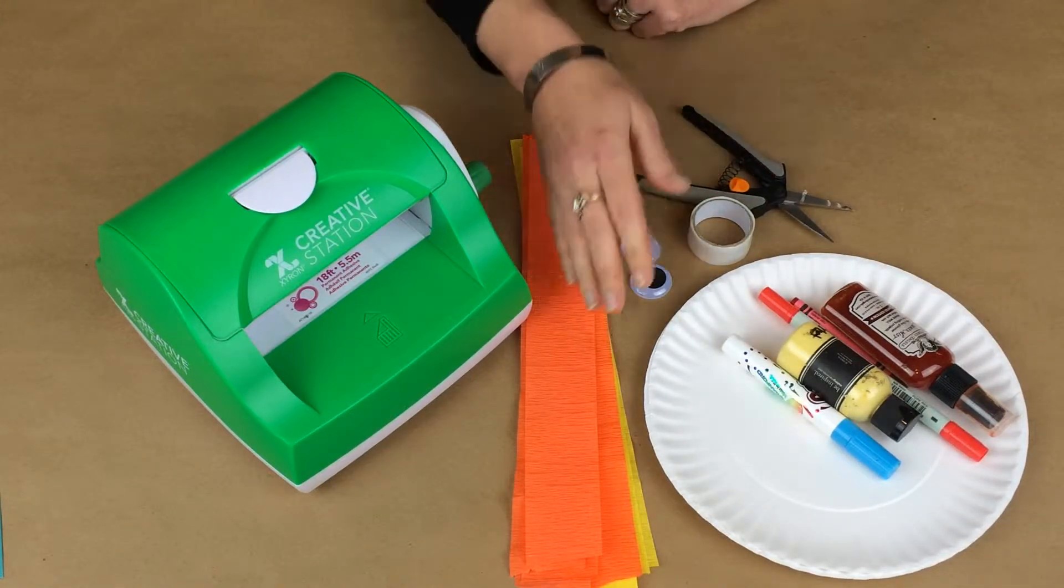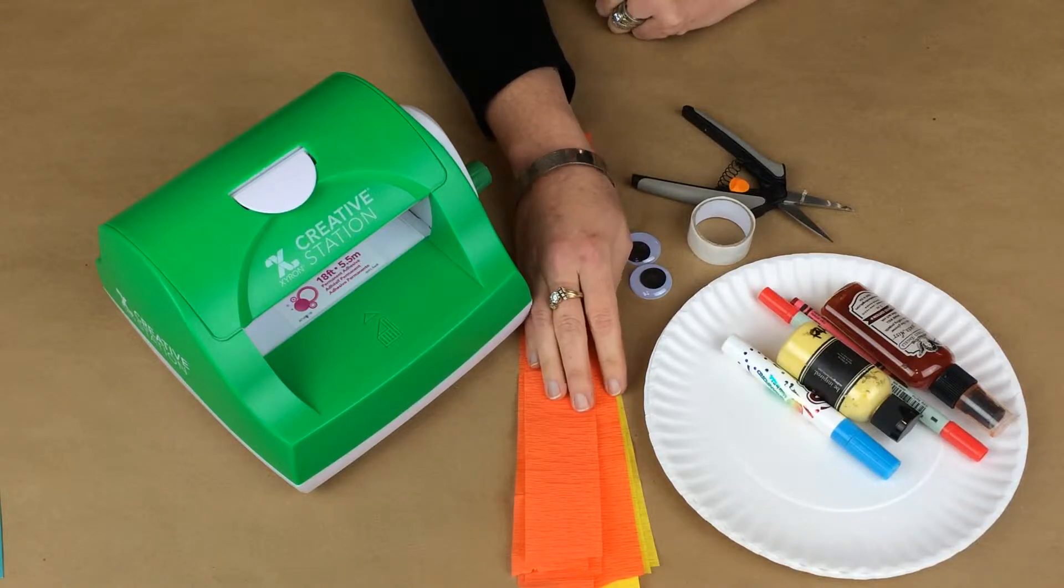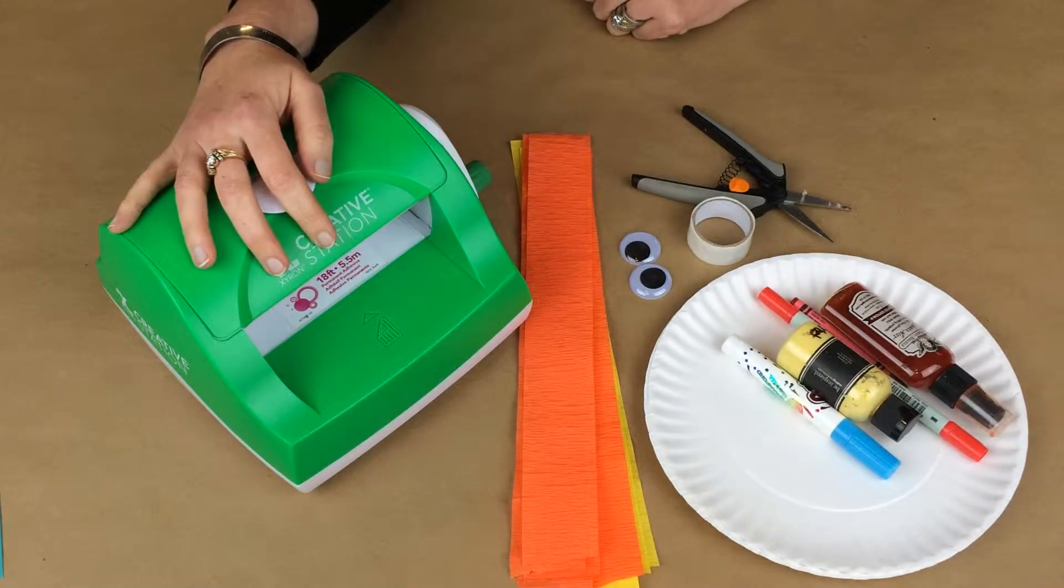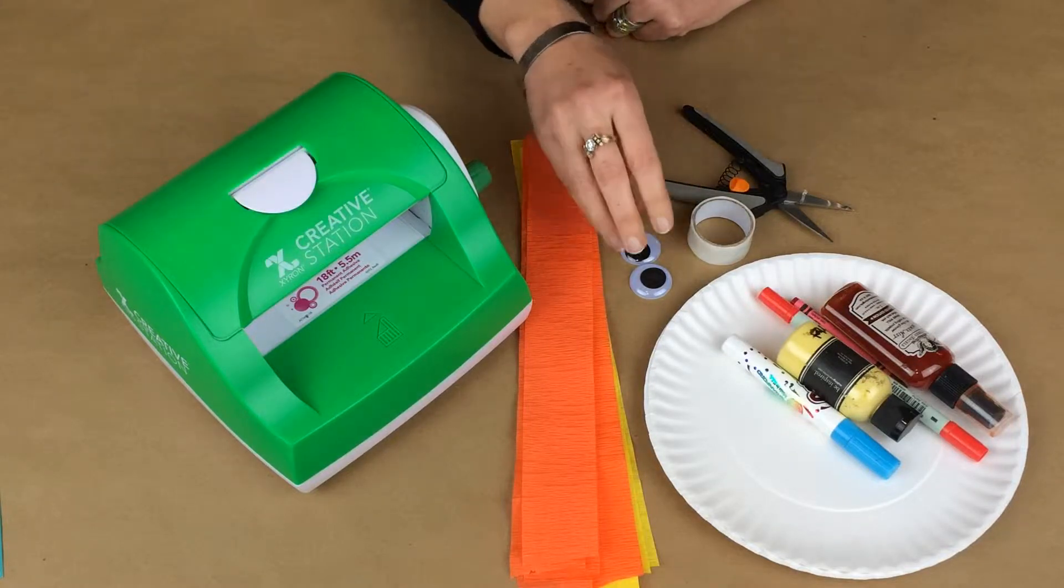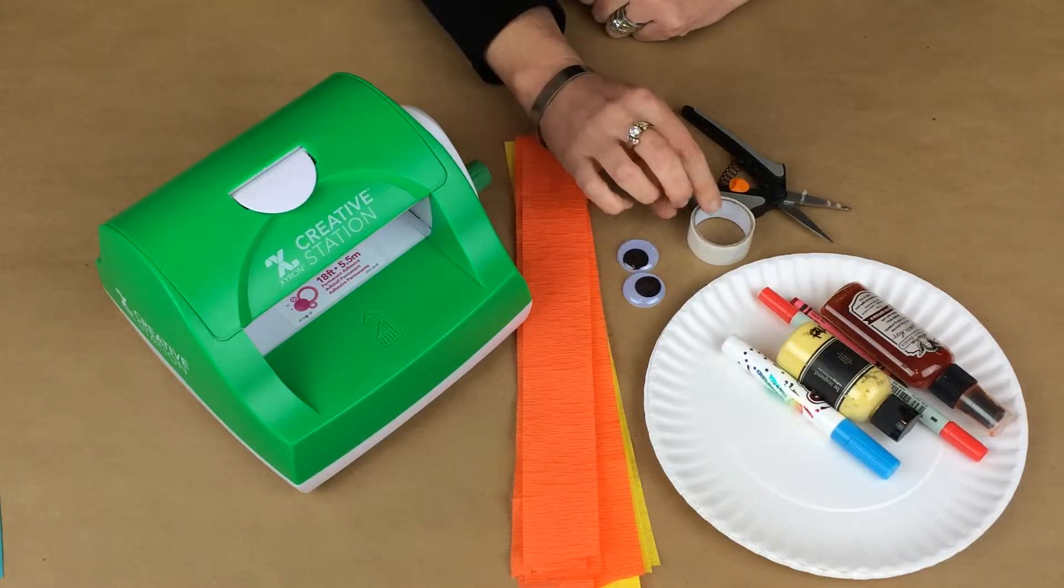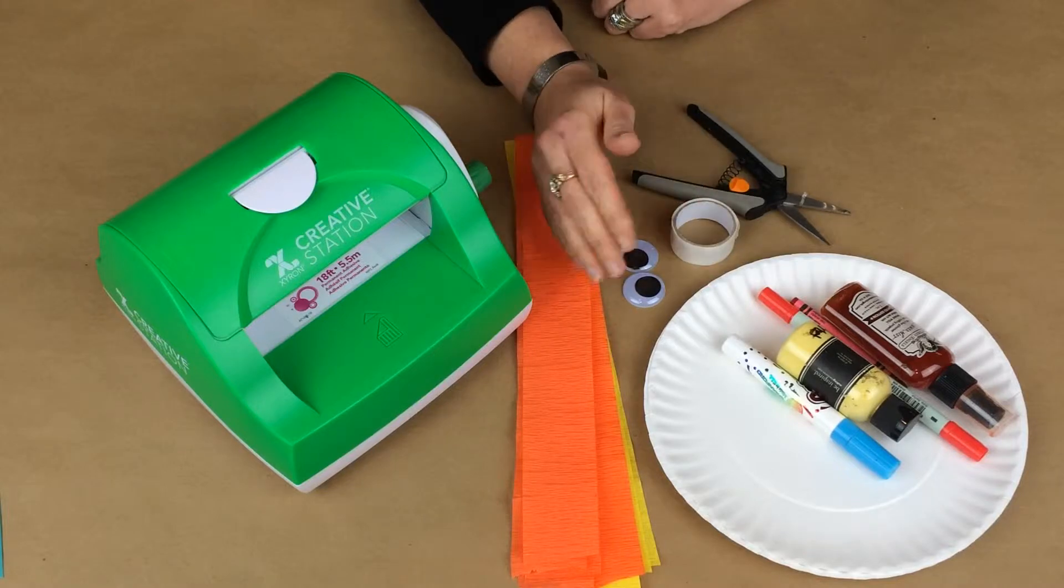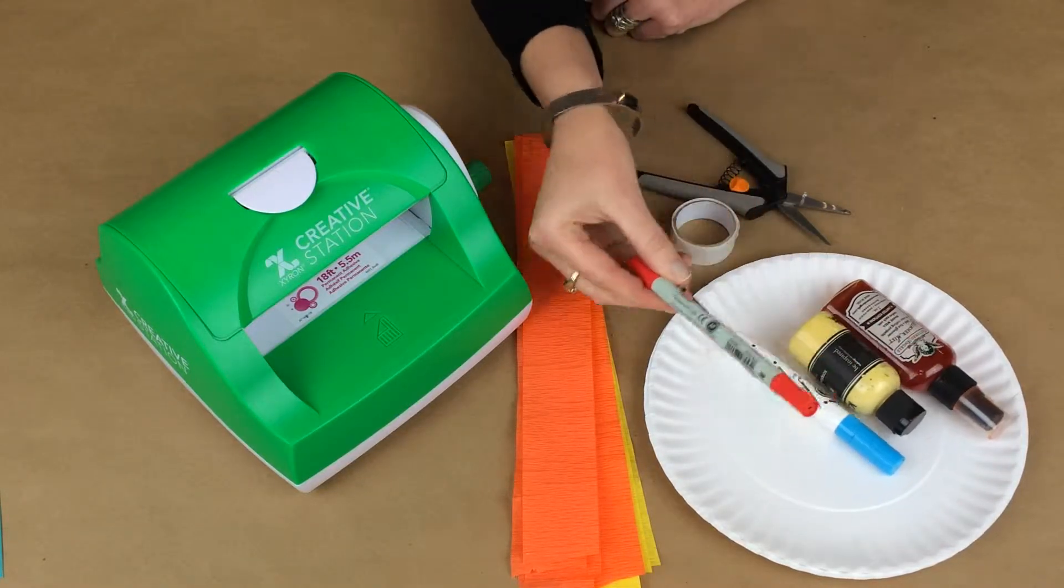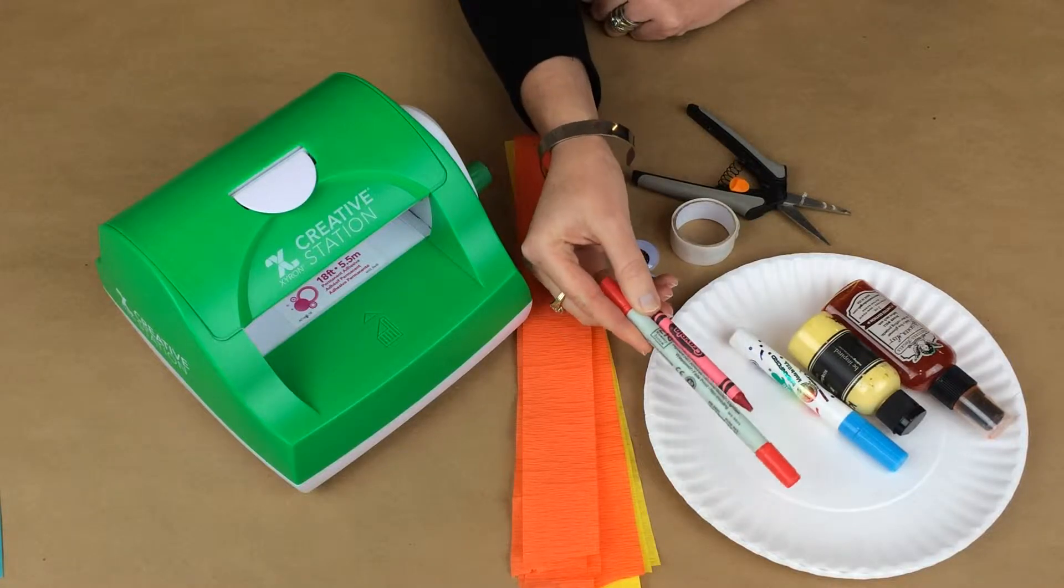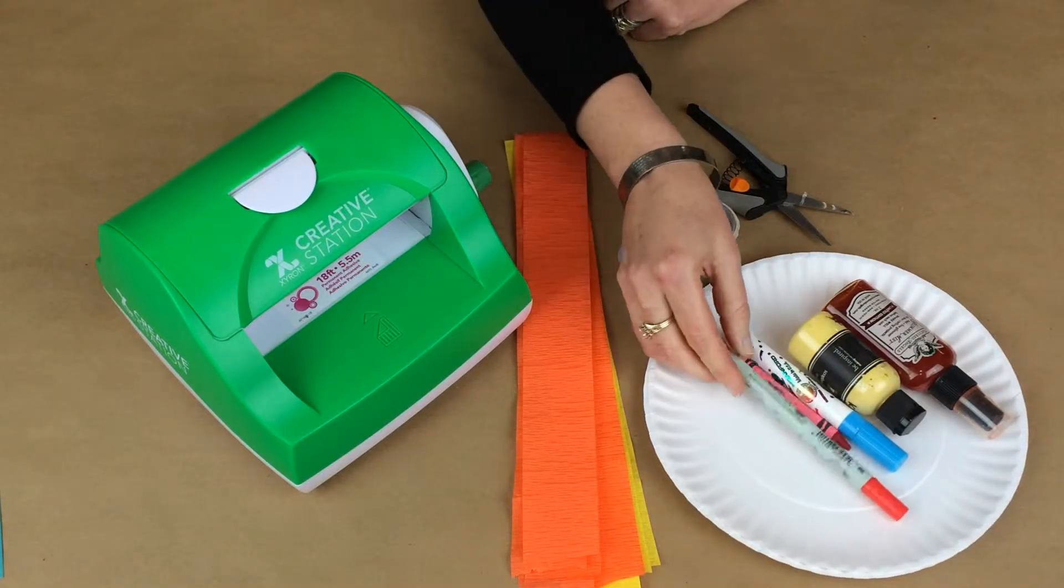a pair of scissors, several strips of crepe paper, your Xyron 5 inch Creative Station with the permanent adhesive inside, you're going to need a set of googly eyes and then you're going to need either glue dots or liquid glue to adhere those, and you're going to want to have a red pencil crayon or marker to draw the mouth on our jellyfish.